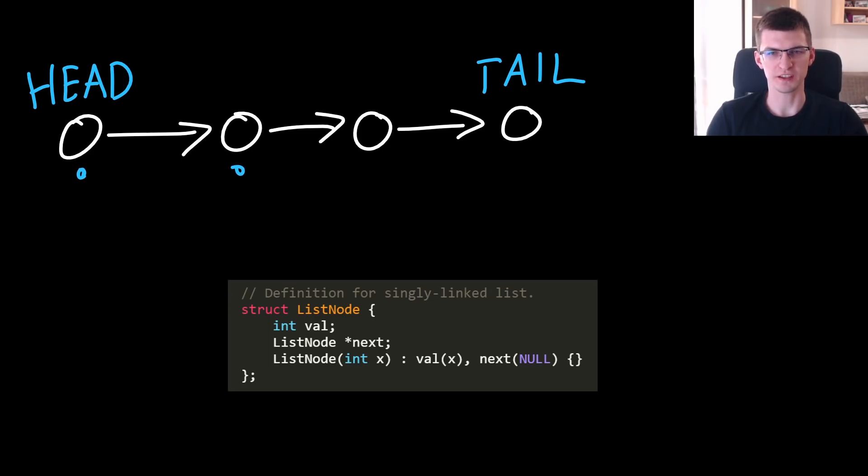Every single thing in the list is a node and node is described by two values, its value, maybe for example 7, and a pointer to the next node. If it was a doubly linked list, then there would also be a pointer to the previous node, but in this problem we deal with a singly linked list.